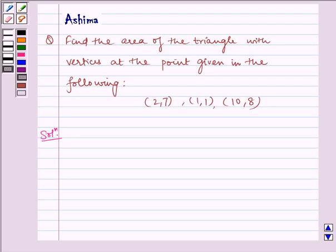Hello and welcome to the session. Let us understand the following problem today. Find the area of a triangle with vertices at the points (2,7), (1,1), and (10,8).